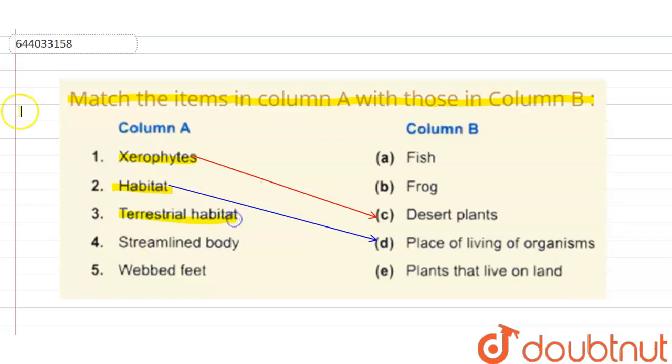Next is terrestrial habitat. Terrestrial habitat is a type of habitat in which organisms live on the land, so we will match it with the plants that live on land.